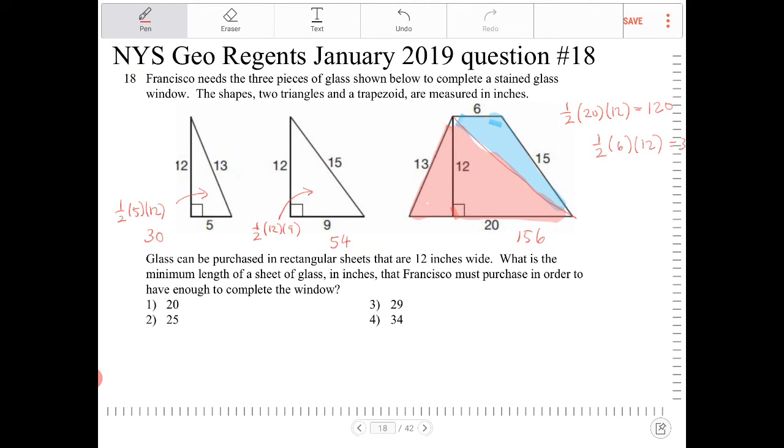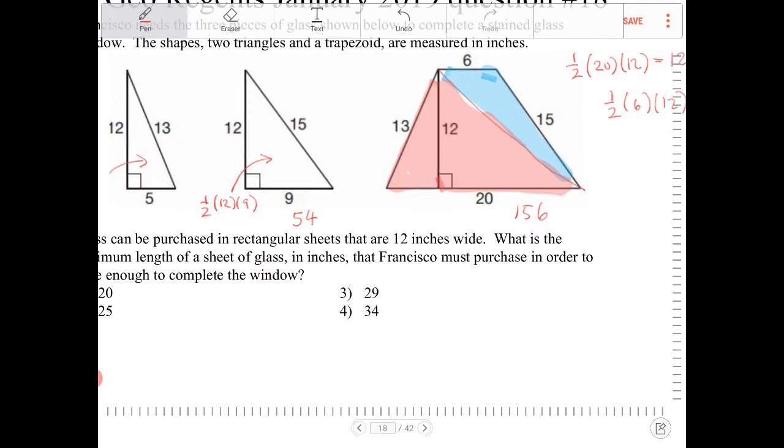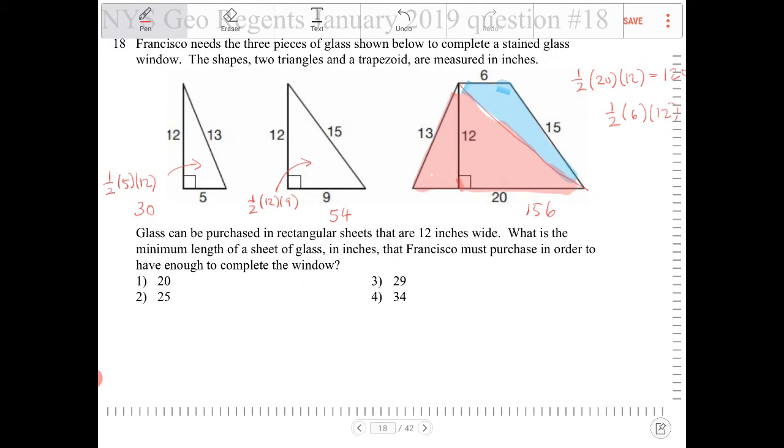So the area of all three of these pieces together, what will that be? So 30 plus 54, that's 84. 84 plus 156, that will be 240. So I have a surface area of 240.